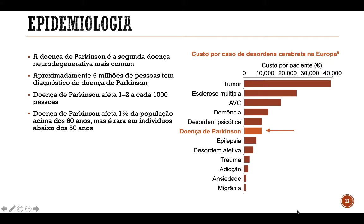Nesse gráfico ao lado podemos observar o custo da doença de Parkinson comparada a outras desordens cerebrais na Europa, mensurado em euros. A doença de Parkinson é a sexta doença mais cara de se tratar, ficando atrás dos tumores cerebrais, da esclerose múltipla, do AVC, da demência e das desordens psicóticas.